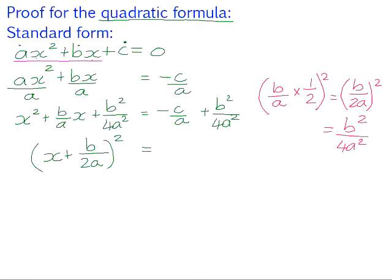On the right-hand side, we can find the lowest common denominator in order to simplify the fractions. So the common denominator needs to be 4a squared in order to keep the a happy and the 4a squared. We have to multiply a by 4a, so we do the same in the numerator. That gives us negative 4ac. And here, we don't have to multiply the second denominator by anything, so it stays as b squared.